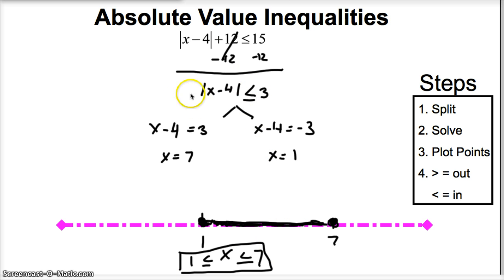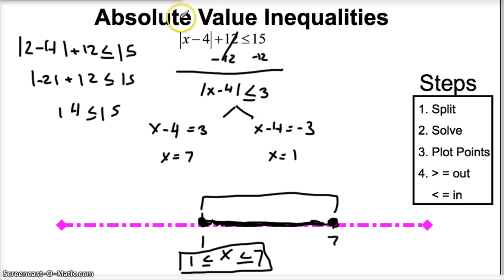If for some reason you didn't believe me, we could also just try plugging in a number between 1 and 7. What are you thinking? I'm thinking, let's try plugging in 2 to our equation. So let's try this. So if I plug in 2 minus 4, okay, I'm just plugging in for x, plus 12 is less than or equal to 15. Okay? This would give us the absolute value of negative 2 plus 12 is less than or equal to 15. This gives us 14 less than or equal to 15. Sure enough, it works. So that proves that any number in between 1 and 7 is within the solution set to our equation.